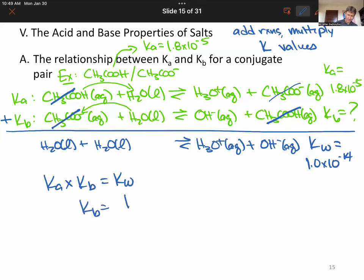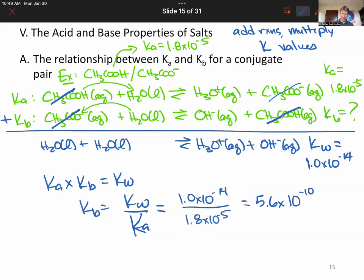And so now, if we want to find KB, it's going to be Kw over Ka. And these are all capital Ks, just to be clear. And that's 1.0 times 10 to the minus 14 over 1.8 times 10 to the minus 5. And let's multiply this out. I get 5.555 times 10 to the minus 10. It's 2 sig figs, 5.6 times 10 to the minus 10.